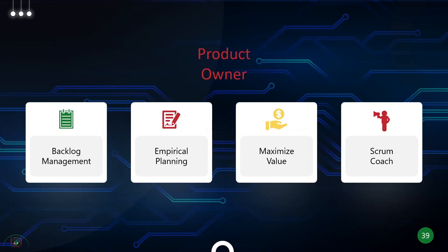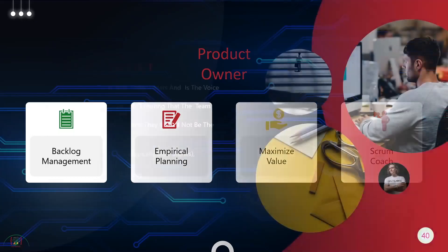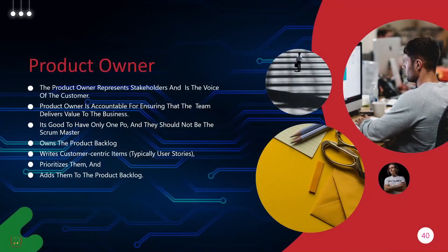Not like the tree swing story that we saw earlier. They have to be somebody who knows the Agile Manifesto and follows the Agile principles. They represent the stakeholders, they're the voice of the customers, and they're accountable for what the team is doing to the business.